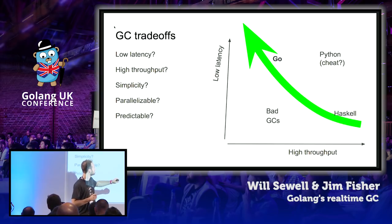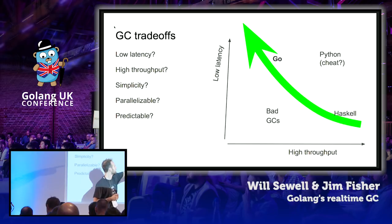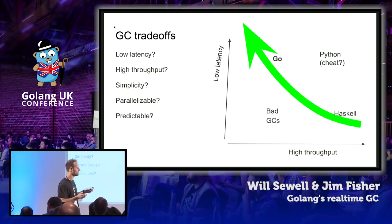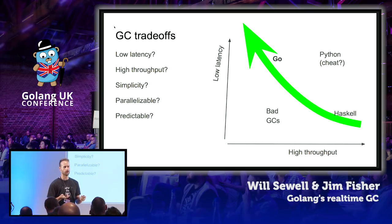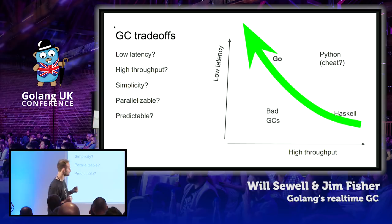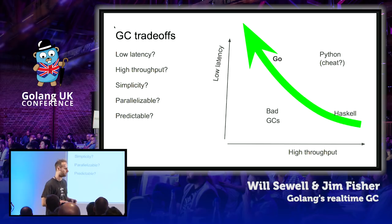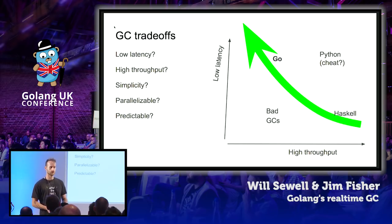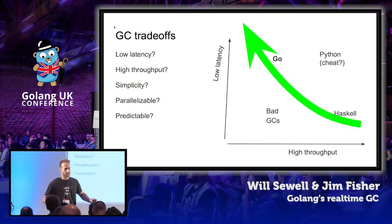It turned out that Haskell was actually optimized explicitly for high throughput — on average, we could send many messages per second. But what we actually wanted to optimize for was more along the low latency metric. Some languages like Python can seemingly give you both, but they cheat — using an approach called reference counting, where each object has a counter of how many references there are to it. However, reference counting can leak objects when you create cycles, so we discarded that option.